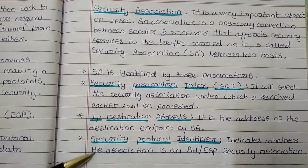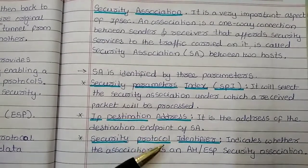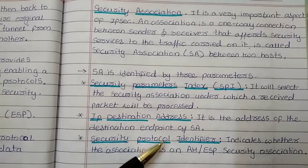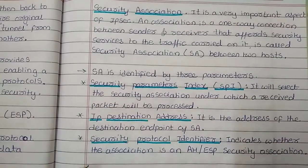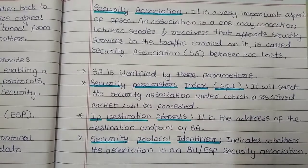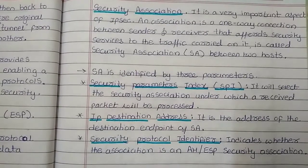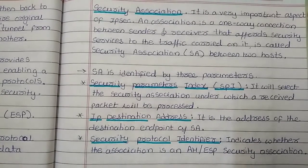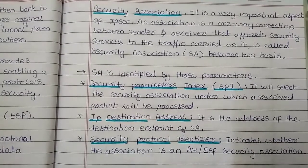The second parameter is the IP destination address, which is the destination endpoint of the security association. The third parameter is the security protocol identifier, which indicates whether the association is an Authentication Header or Encapsulating Security Payload security association.